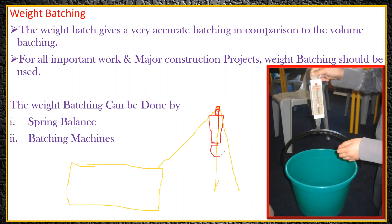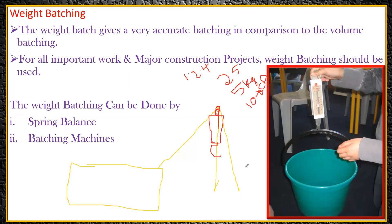We hang a bucket from the spring balance so we can place materials into it. For example, if we want to prepare a mix of 1:2:4, and we need 2.5 kg of cement, 5 kg of sand, and 10 kg of coarse aggregate — values from a previous mix design slump cone test — we put the bucket on the spring balance, fill it with 2.5 kg of cement, and it will give us a reading of 2.5 kg. Then we pour the cement out.